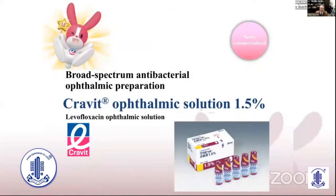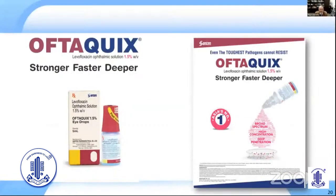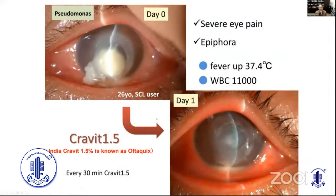Therefore, 1.5 percent has very meaningful advantages. Cravit 1.5 percent achieves almost the same concentration as moxifloxacin and is more sensitive to Pseudomonas aeruginosa.